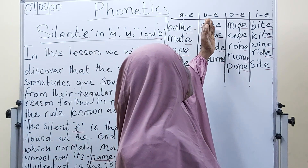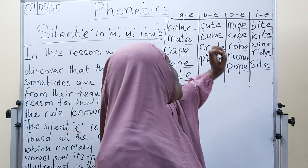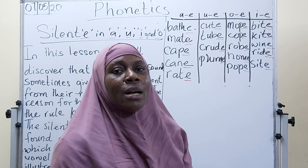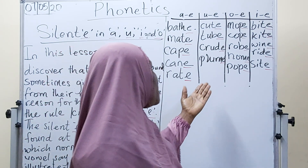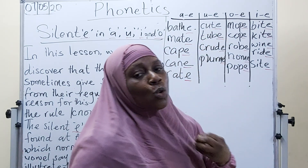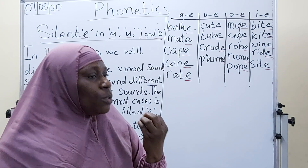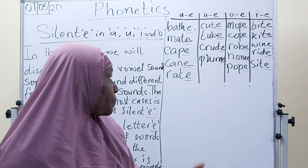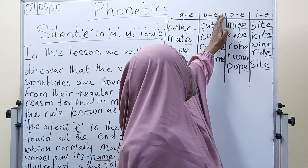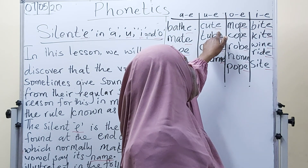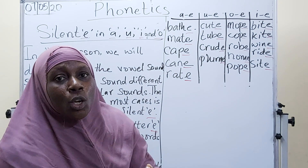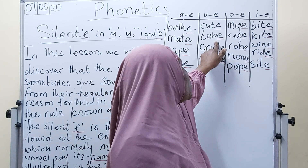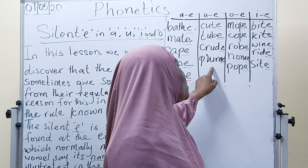Now we want to look at the next vowel that is affected by the silent E, which is the letter U. The letter U sounds 'u' as in umbrella, as in cup, as in bus, et cetera. But in this case, because there is a letter E there, U will sound 'you'. It's going to sound 'you' rather than the 'u' we are used to. So here, if we remove the E, this is going to be 'cut'. But when we add the E, we have 'cute'. We can hear the 'you' there — 'cute'. If we remove the E here, it's 'tub'. When we put the E, we have 'tube'. The next one, 'crude', and the last one, 'blue'.